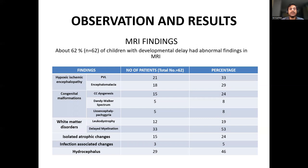About 62% of the children with developmental delay had abnormal findings on MRI. Specific findings included: periventricular leukomalacia (33%), encephalomalacia (29%), corpus callosal dysgenesis (24%), Dandy-Walker spectrum (8%), lissencephaly/pachygyria (8%), leukodystrophy (19%), delayed myelination (53%), isolated atrophic changes (24%), infection-associated changes (5%), and hydrocephalus (46%).